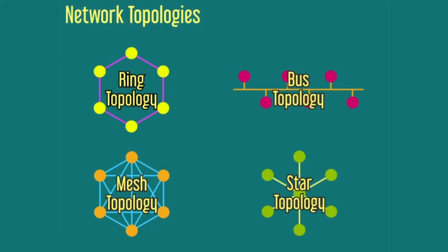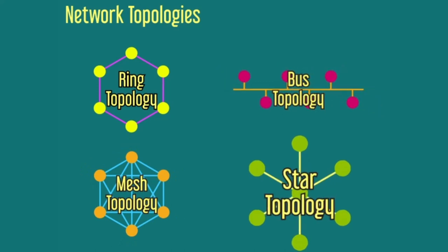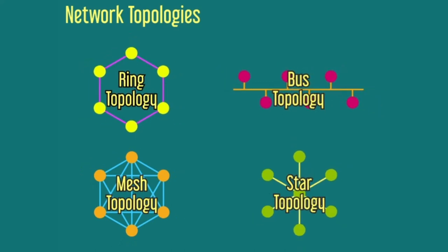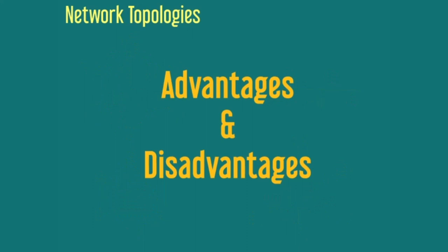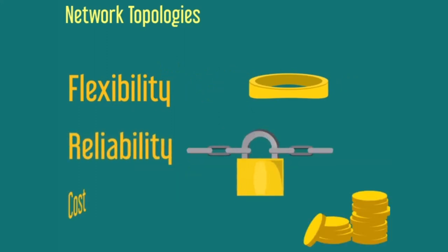Today, you've examined four different network topologies. You've explored the mesh, bus, star, and ring networks, including their advantages and disadvantages. The type of topology you'll choose depends on your requirements for flexibility, reliability, and cost.